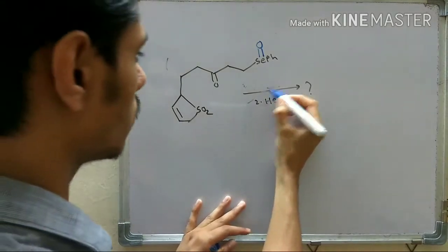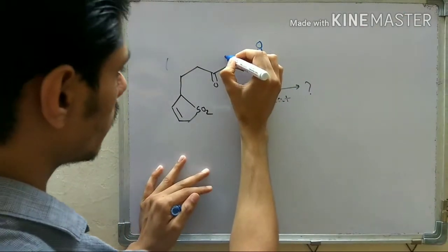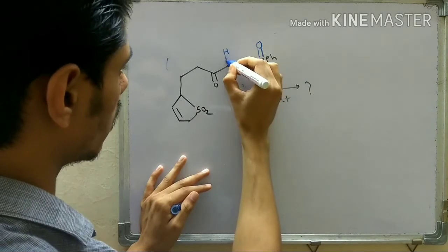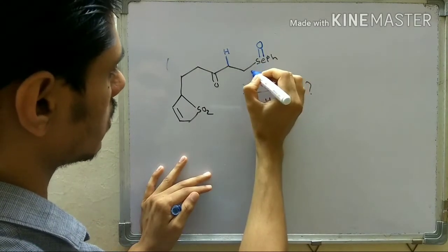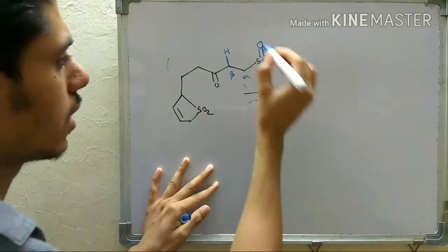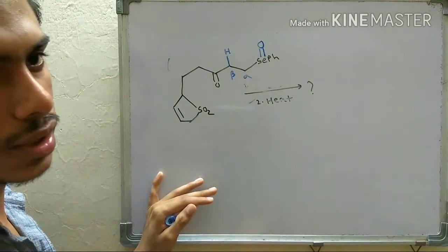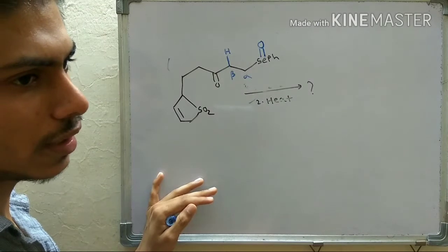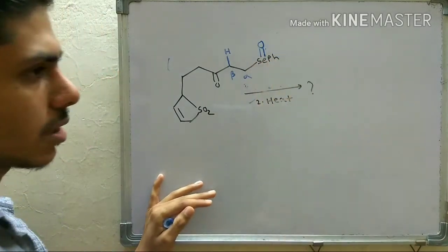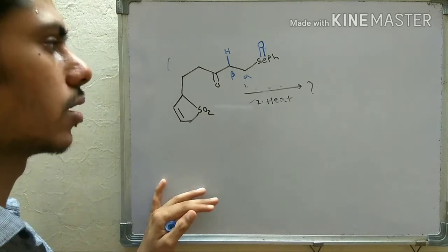Now this is the first step — reaction with H₂O₂. Next, when you have a selenium oxide and there is a proton — a beta hydrogen — it can undergo an ene reaction, also called the Alder-ene reaction. I discussed the ene reaction in my pericyclic lecture; you can check that out.